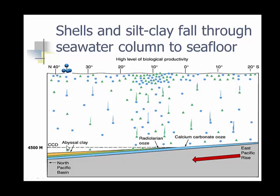When we get depths below 4,500 meters, the calcium carbonate starts to dissolve. That allows the radiolarian ooze — the siliceous ooze — to go on top of it, and then we may even get abyssal clays on top of that, the terrigenous material. Going to the North Pacific Basin, we can go back up to the ridge, which is covered with calcium carbonate because it's above the CCD — the calcium carbonate compensation depth — where calcium carbonate ooze does form.